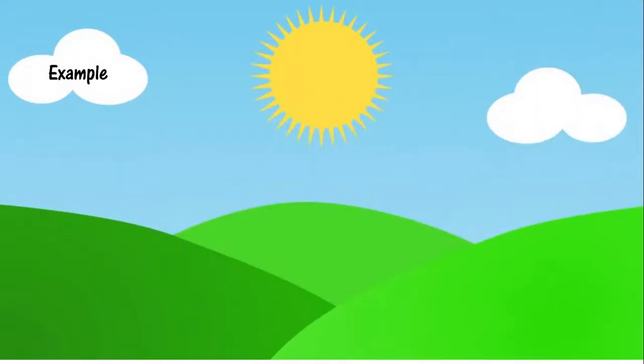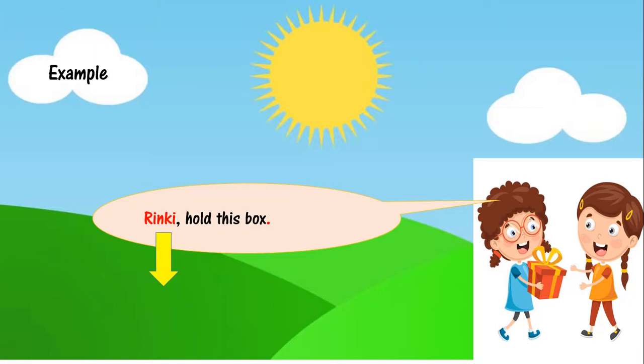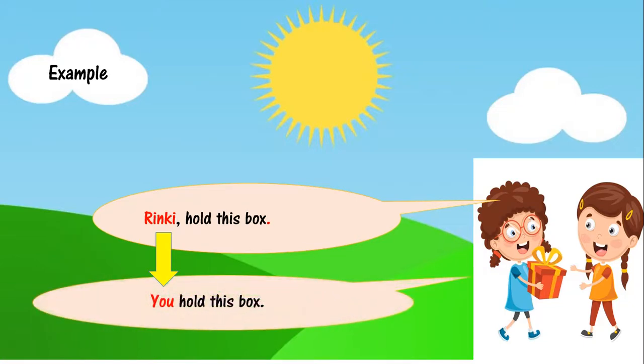Let's look at some examples of pronouns. Look at this picture. In this picture, Rinki's friend is talking to her. Rinki ki friend usse baat kar rahi hai aur usse ek box de rahi hai. Aur woh kya bol rahi hai? Rinki hold this box. Now Rinki is a name, and this name can be replaced by the word you. Rinki ki friend usse ye bhi bol sakti hai: You hold this box.